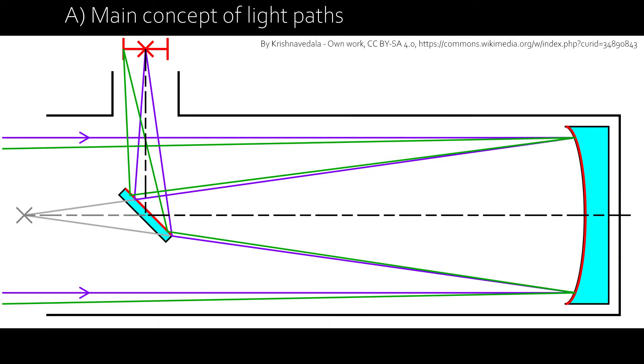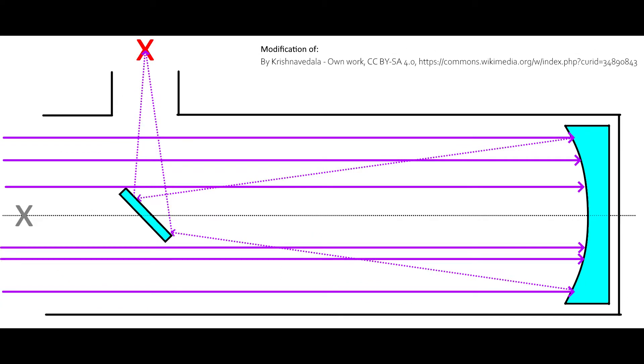So first, the main concept of light paths. Here you can see the schematic of a Newtonian telescope. You see the light entering from far, far away, thus it's parallel, running through the tube and hitting the main mirror on the back side. This mirror is parabolic and has the ability to reflect light in such a way that every beam is focused in the focal point.